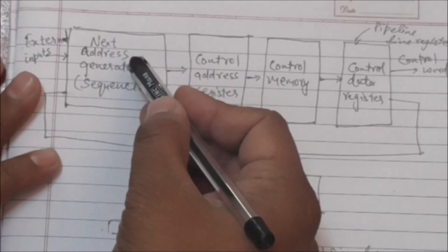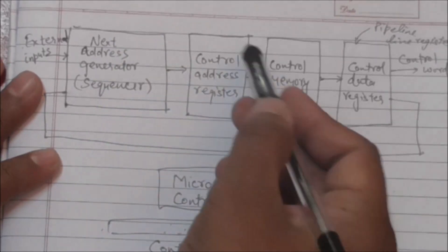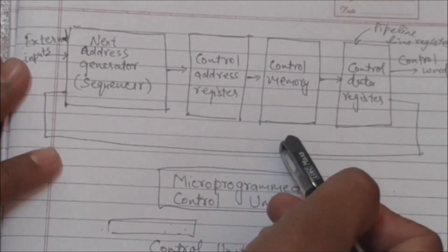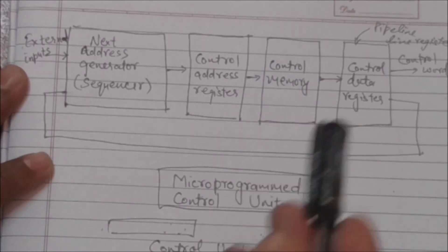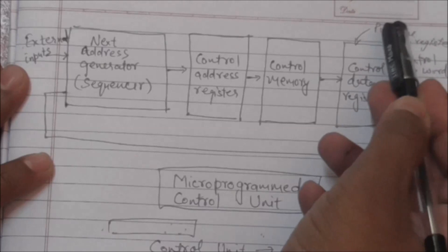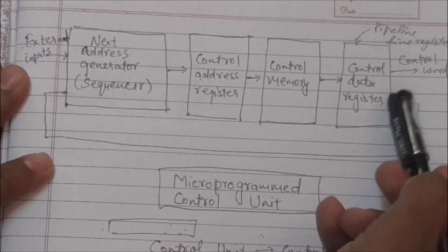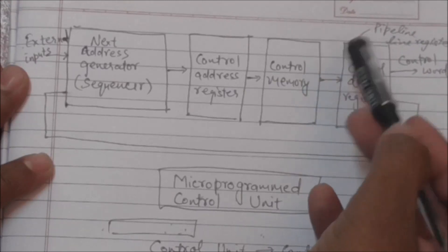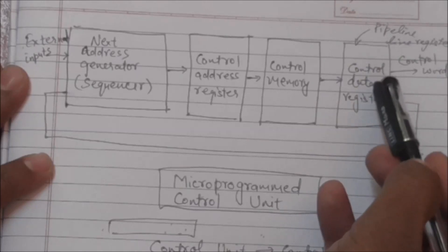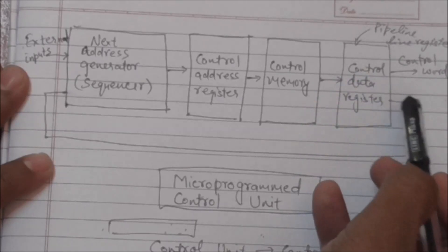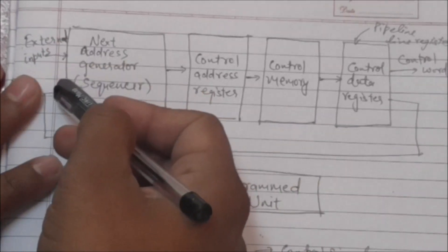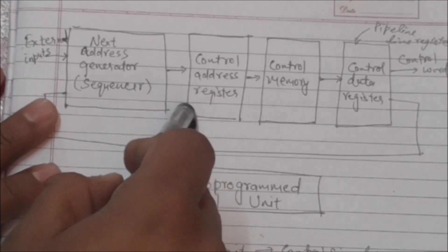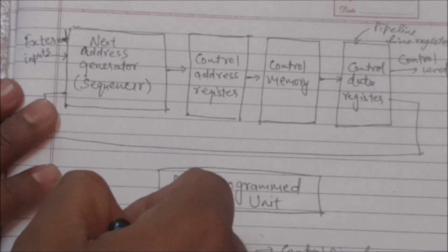The address generated by the next address generator is transferred into the control address register to read the next micro-instruction from control memory. The control data register is also called the pipeline register. A micro-instruction contains a control word that specifies one or more micro-operations. While micro-operations are being executed, the address of the next micro-instruction is computed in the next address generator and transferred into the control address register.